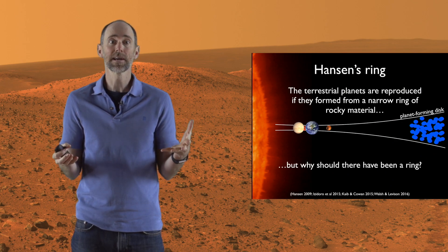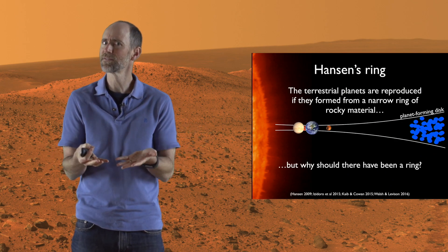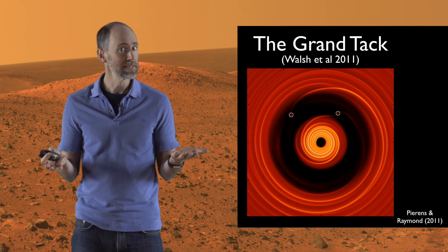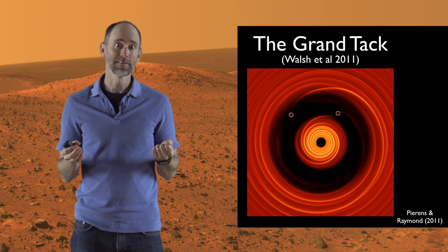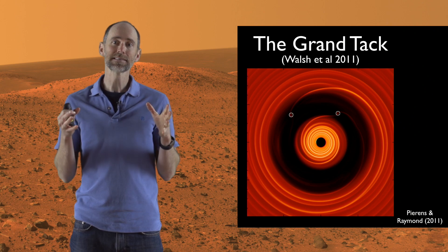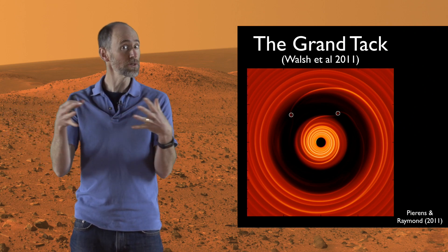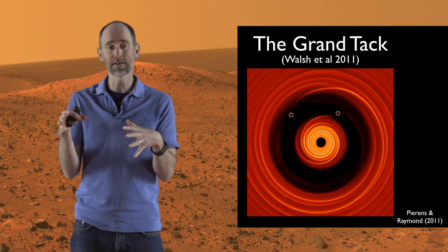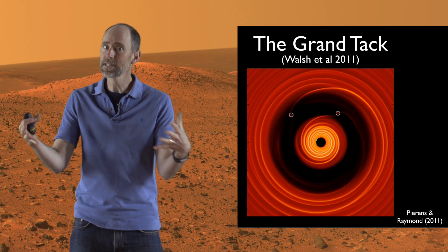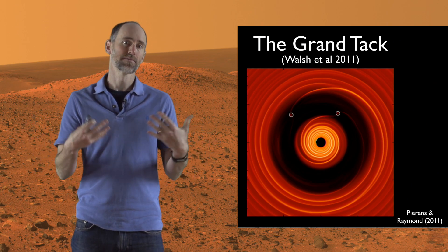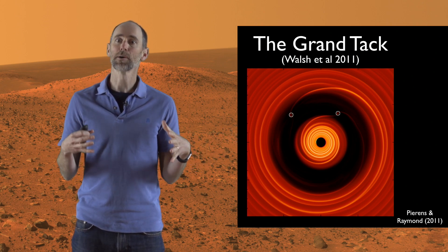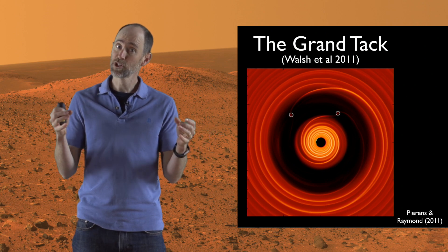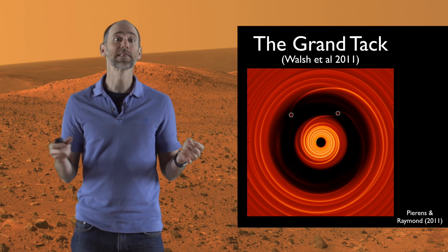But then the question becomes: why should the terrestrial planets have formed from a ring? The first model to explain that was called the grand tack model, which both Morby and I worked on many years ago. It's a very successful model, based on the idea that Jupiter and Saturn's migration early on — while the gas disk was still there — sculpted the inner disk of rocky stuff from which the terrestrial planets formed. This image here is a snapshot from a computer simulation of Jupiter and Saturn migrating around within the disk.